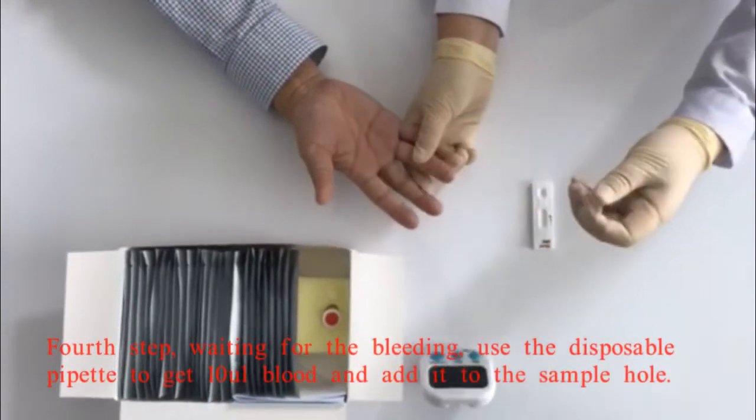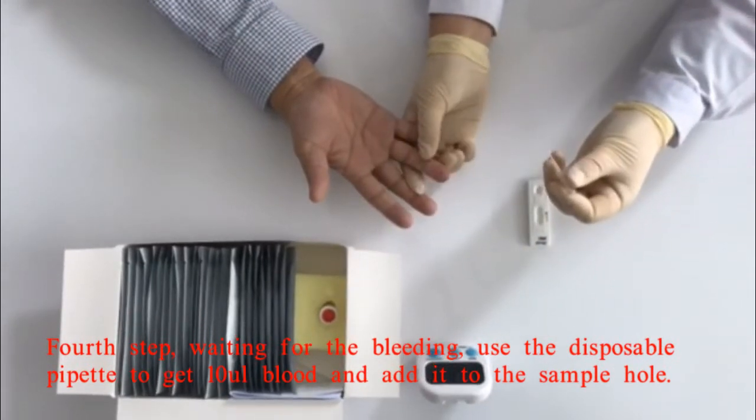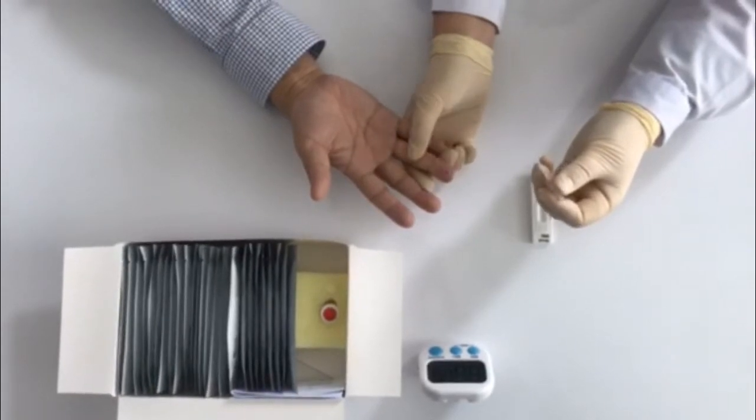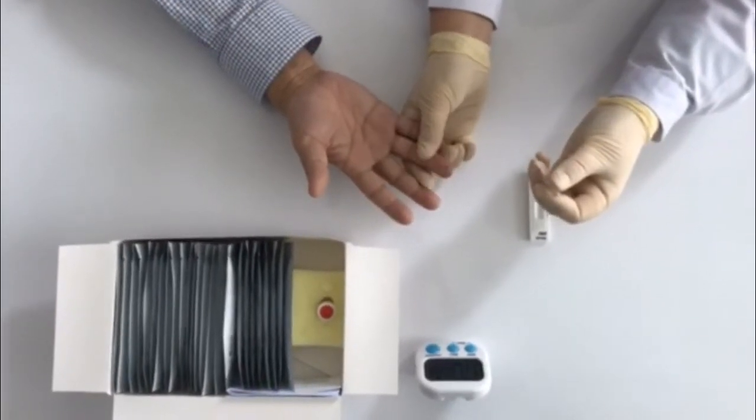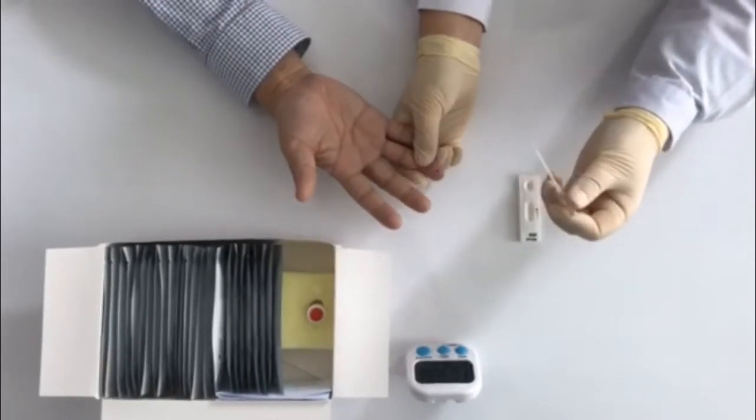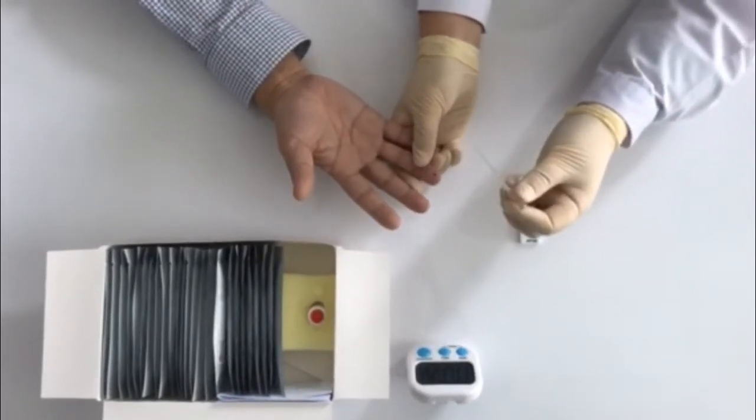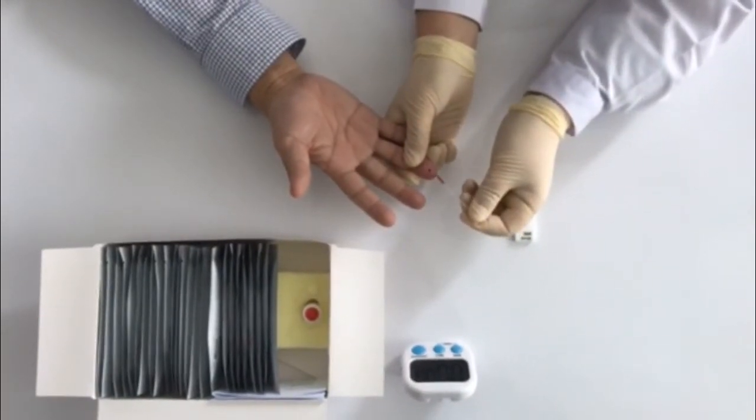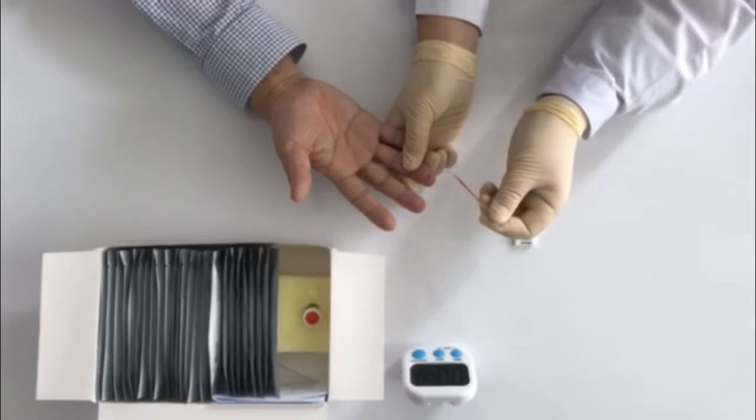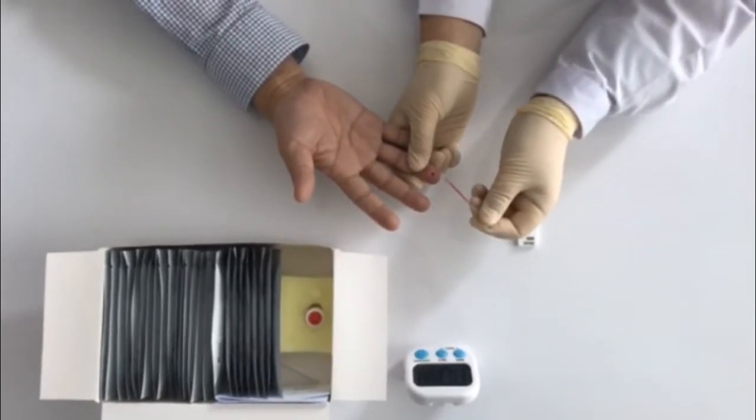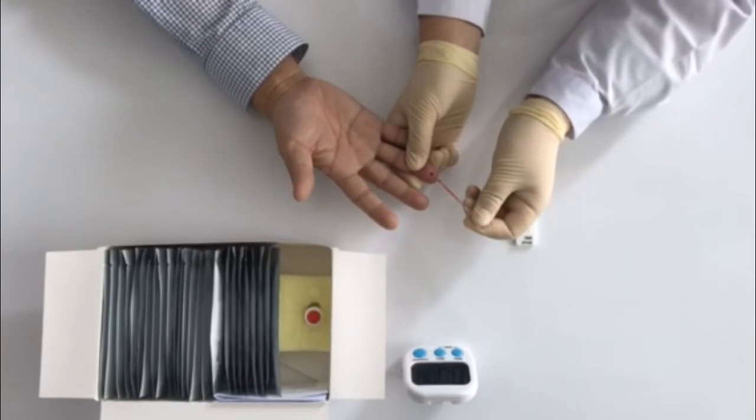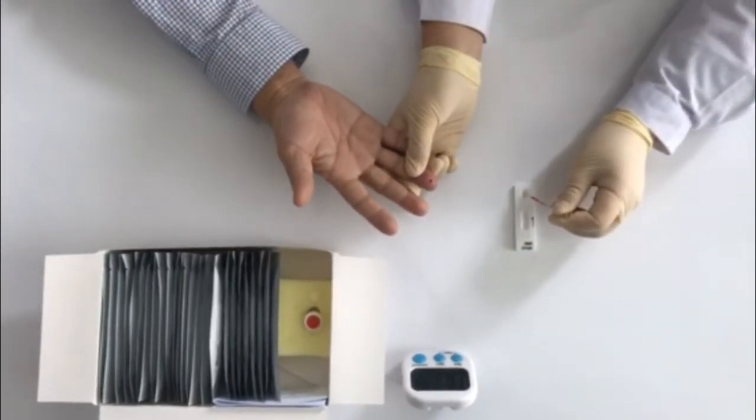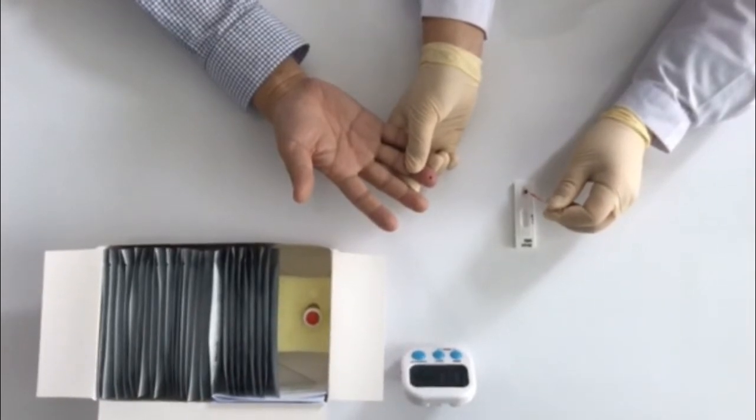Fourth step, waiting for the bleeding, use the disposable pipette to get 10 microliter blood and add it to the sample hole.